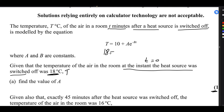Temperature is 80, so 80 equals 10 plus A e to the power — because time is 0, 0 multiplied by something is 0, and e to the power 0 is 1. Therefore, the value of A will be 80 minus 10, and we get the answer for A as 70. This is the answer for the first part — very easy, done in one or two steps.